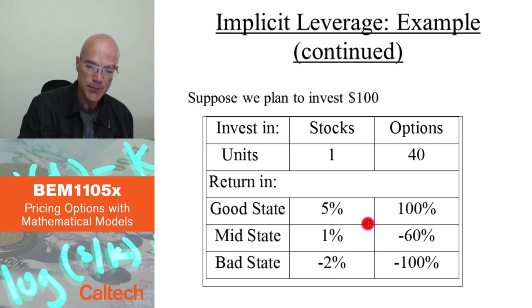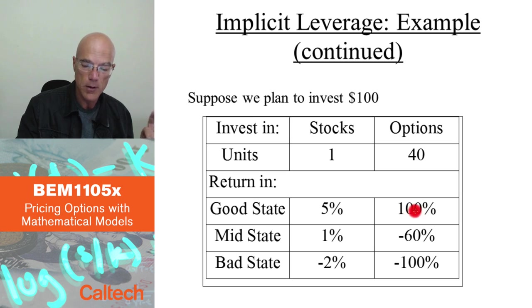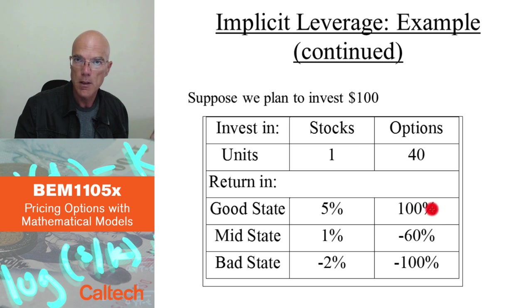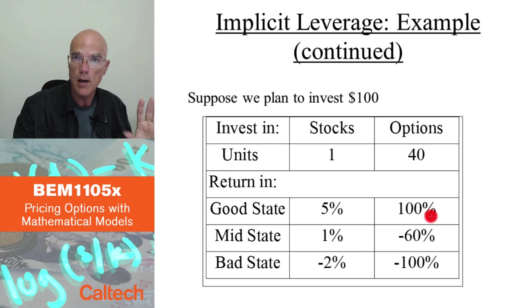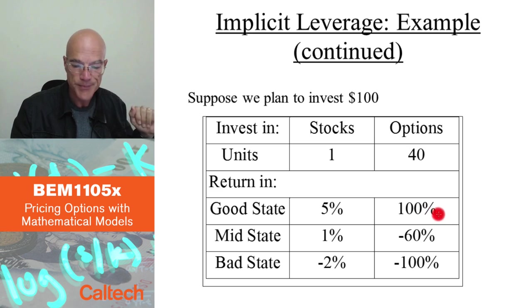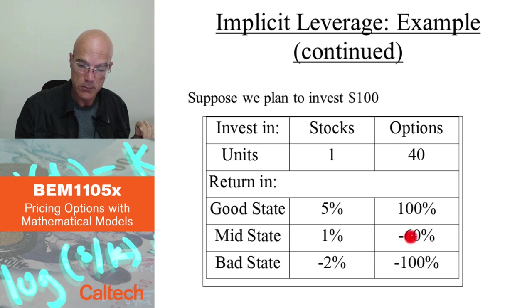Now with options, in the good state, for each option I make a payoff at maturity of $5 — because it went to $105 and the strike price was $100, so $105 minus $100 equals $5. I have 40 options times $5, which is $200, but I paid $100 for those options at the beginning. So I made $100 extra — my return is 100%.